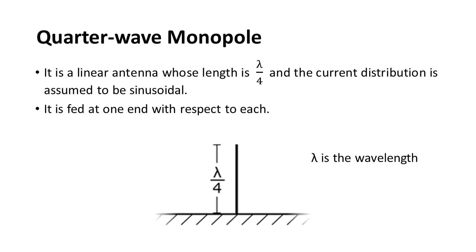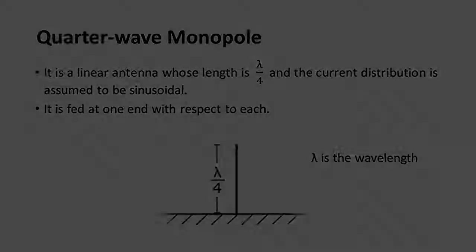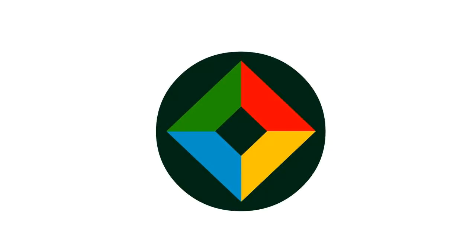The fifth one is the quarter wave monopole. It is a linear antenna whose length is lambda by 4, and the current distribution is assumed to be sinusoidal. It is fed at one end. Thank you very much — if you like this video, please share and subscribe to Open Box Education.